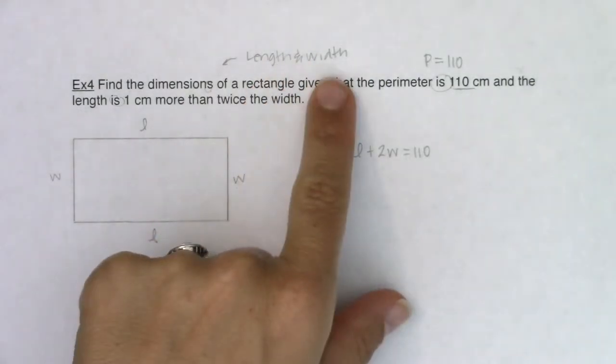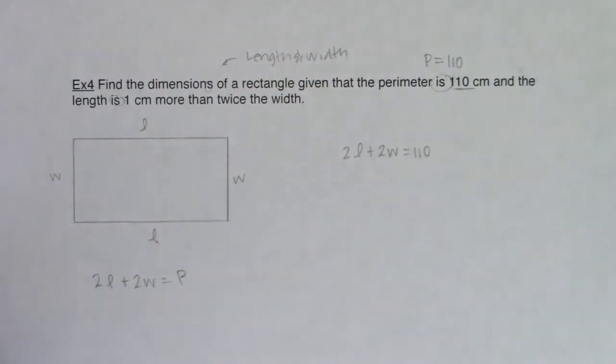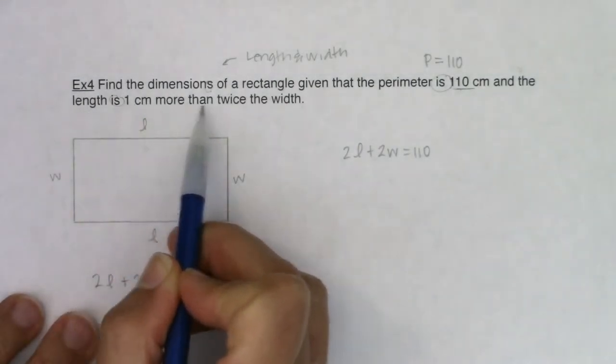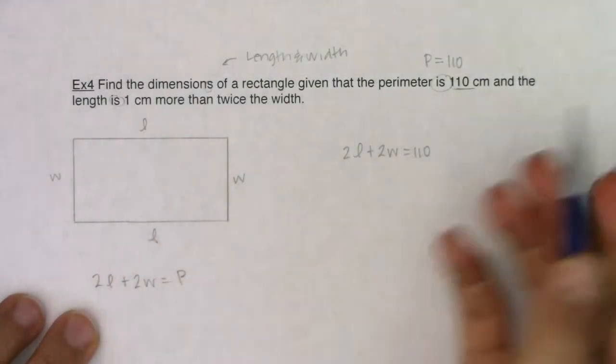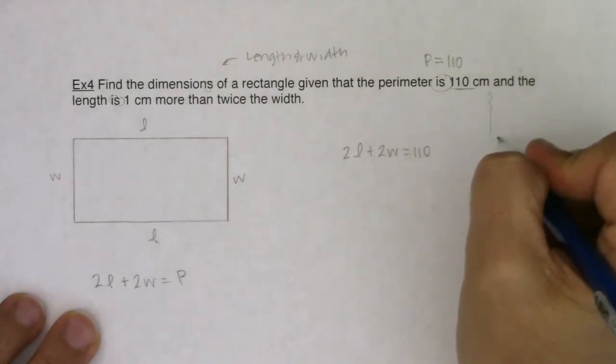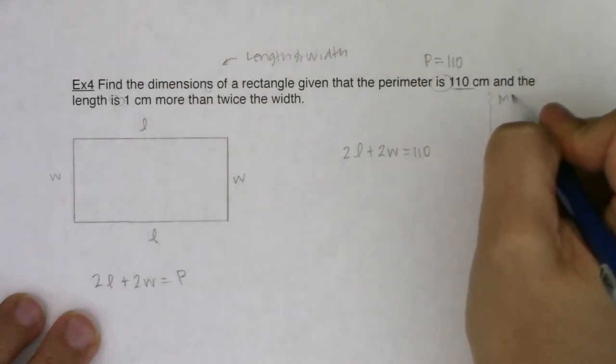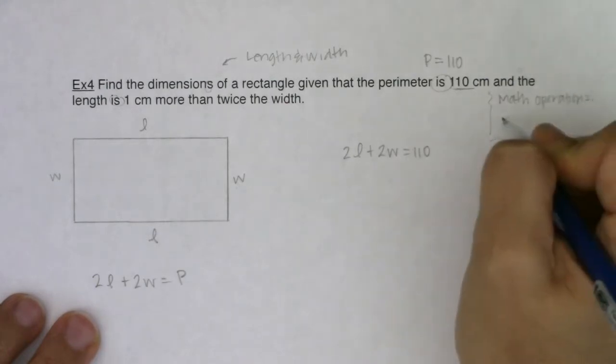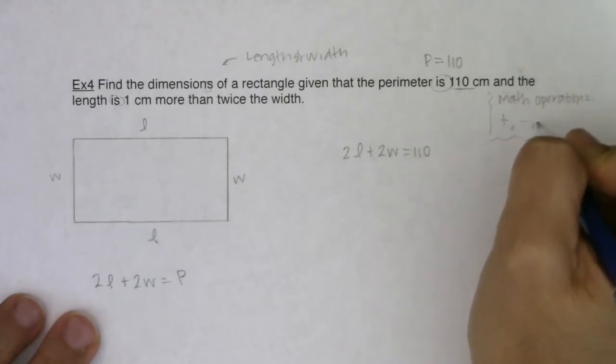But again, if I'm being asked to find two variables, I need the other equation. And here it comes. It says the length is one centimeter more than twice the width. So let me just push off to the side here. We had four math operations, or I should say linear operations, that we had talked about: addition, subtraction, multiplication, and division.